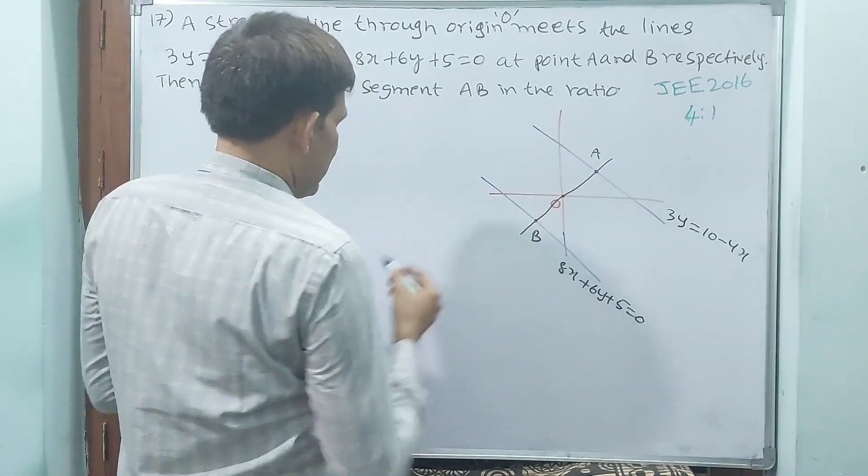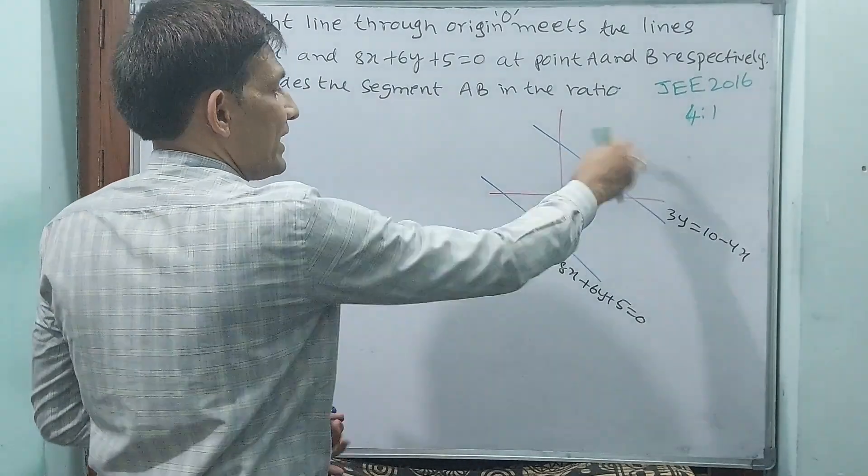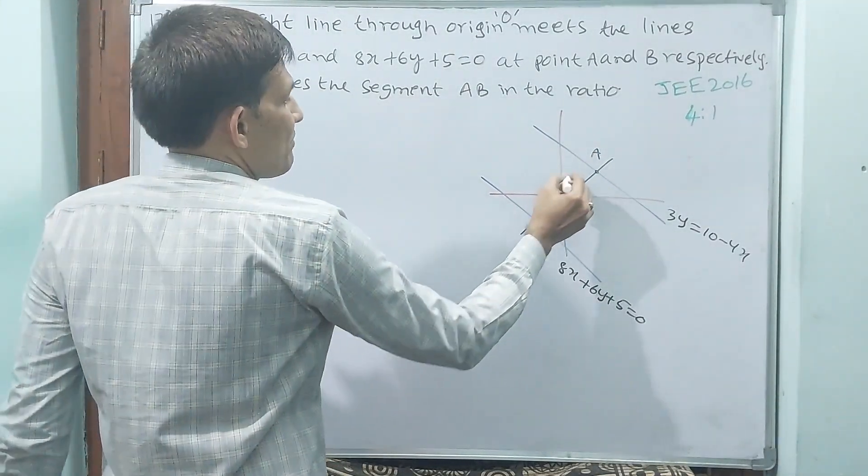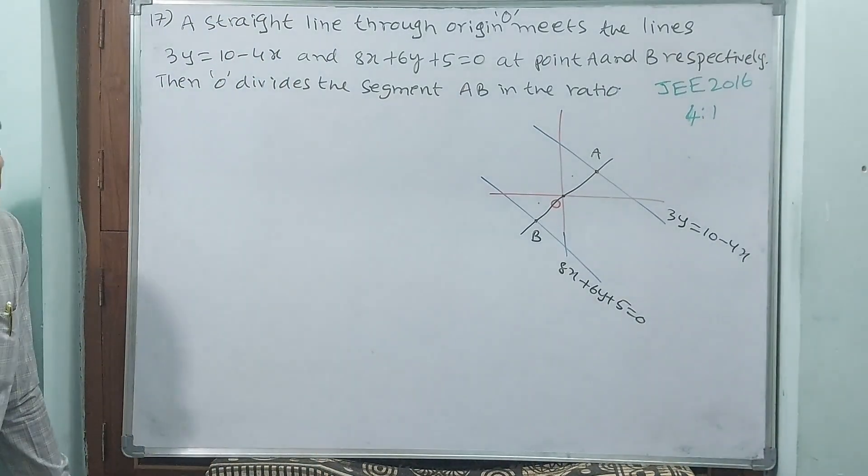From origin it is meeting. They are asking the segment AB, how it is dividing. M is to n. How are we going to decide? Simple.